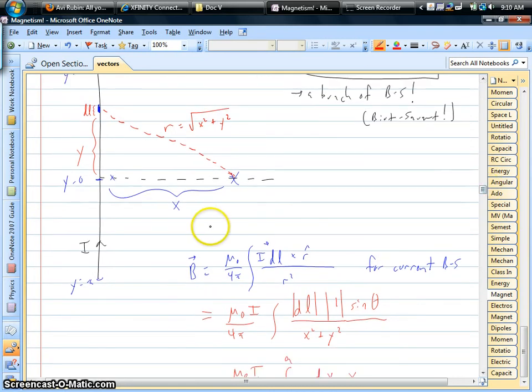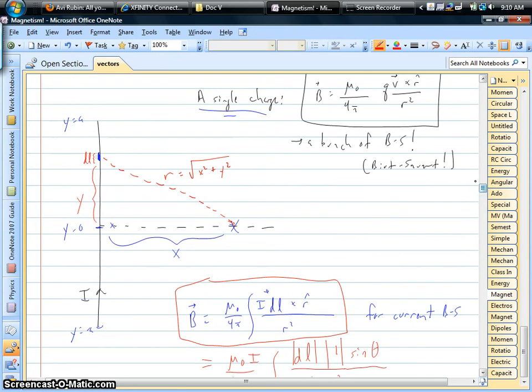Now, when we look at this Biot-Savart equation, we've got this cross product, the current crossed with the r-hat. Now what is r-hat? Well, in this case, we're saying that the current has a direction going up. That's our first vector. r-hat points from the current element down to where we're trying to find the b-field. So it's actually pointing down along this radius line here. That's our r-hat.